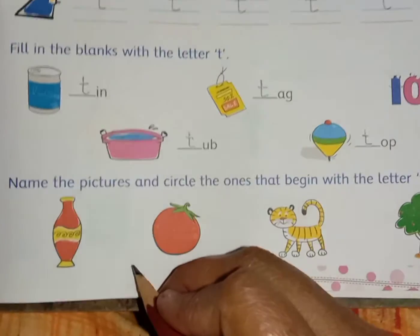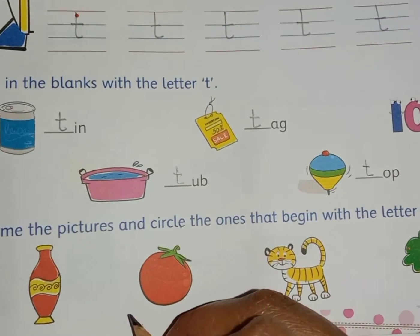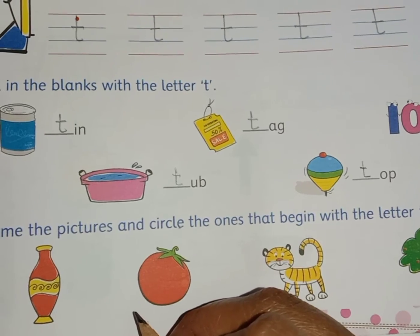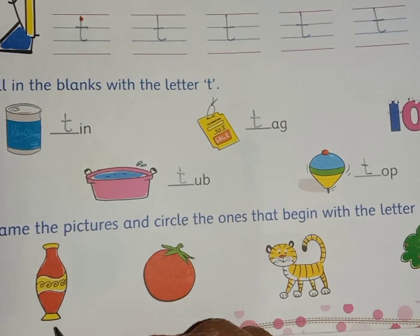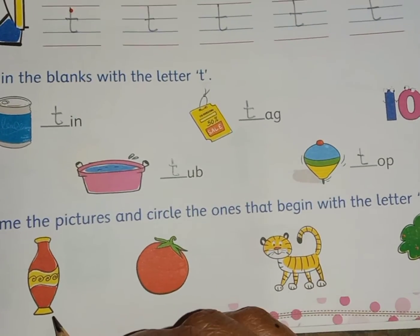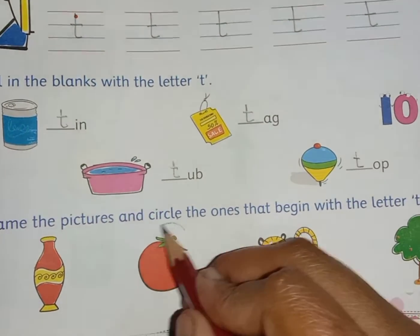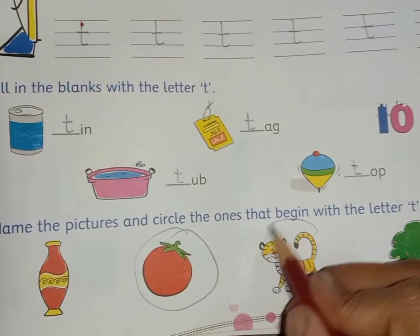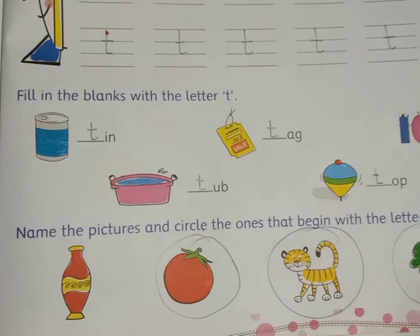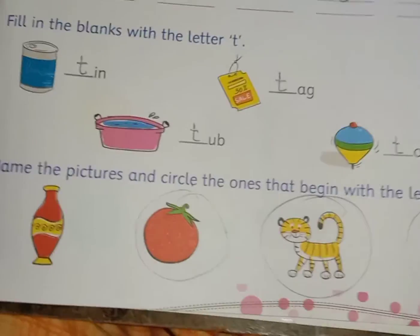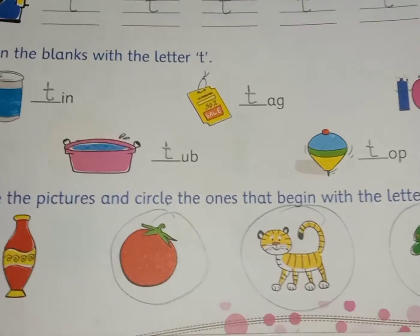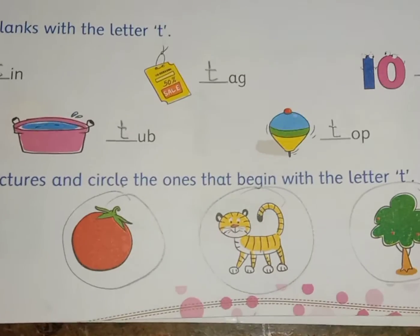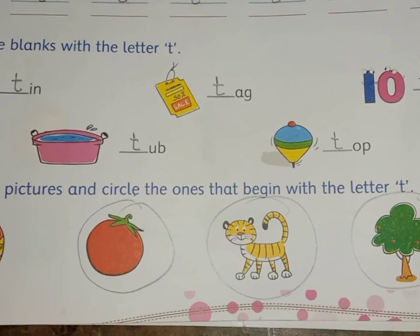Name the pictures and circle the ones that begin with the letter T. This is V for vase and T for tomato, T for tiger and T for tree. So children, you should circle these three pictures. Look very carefully.